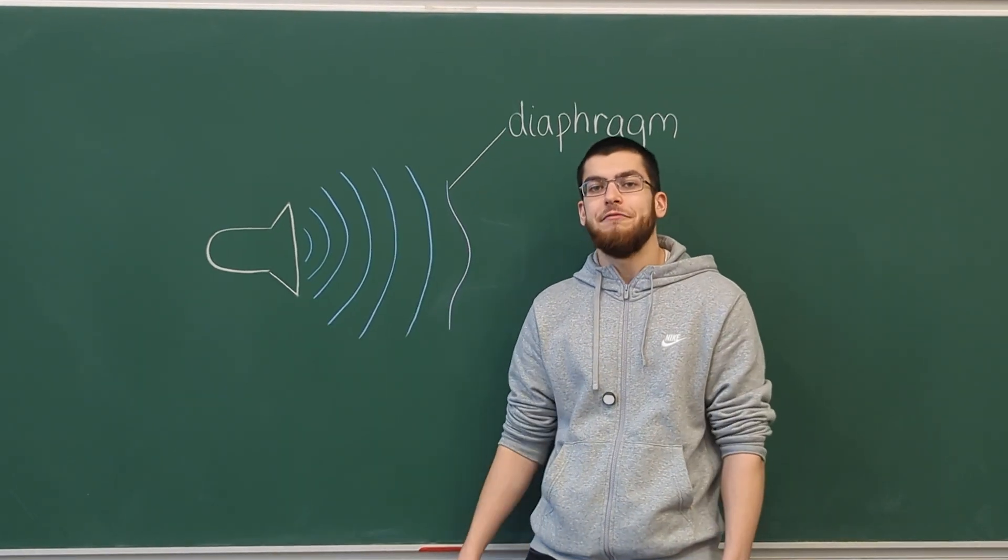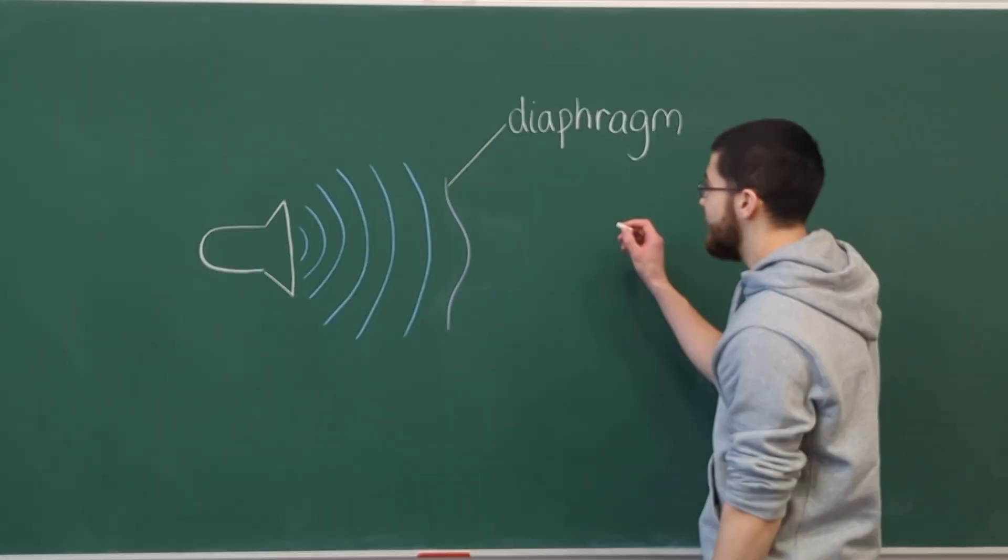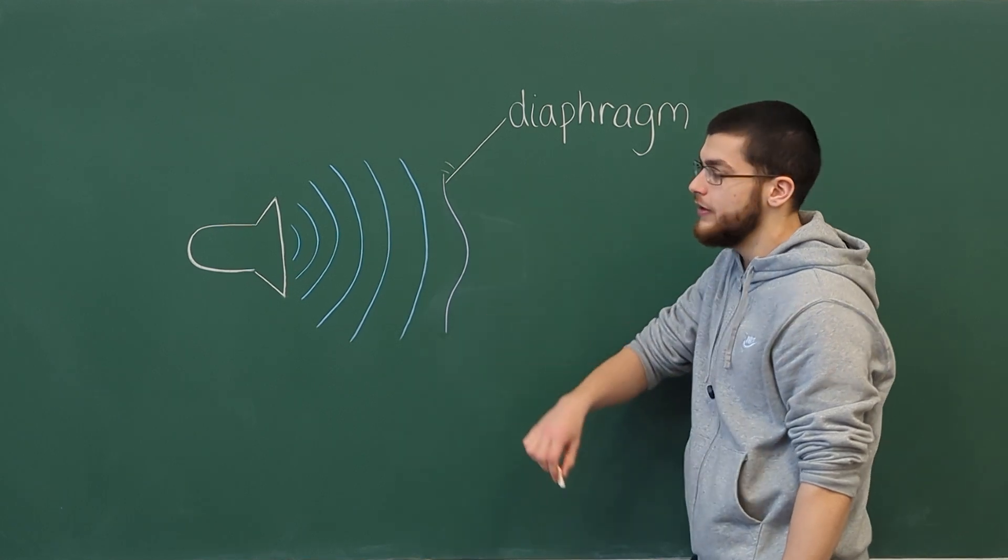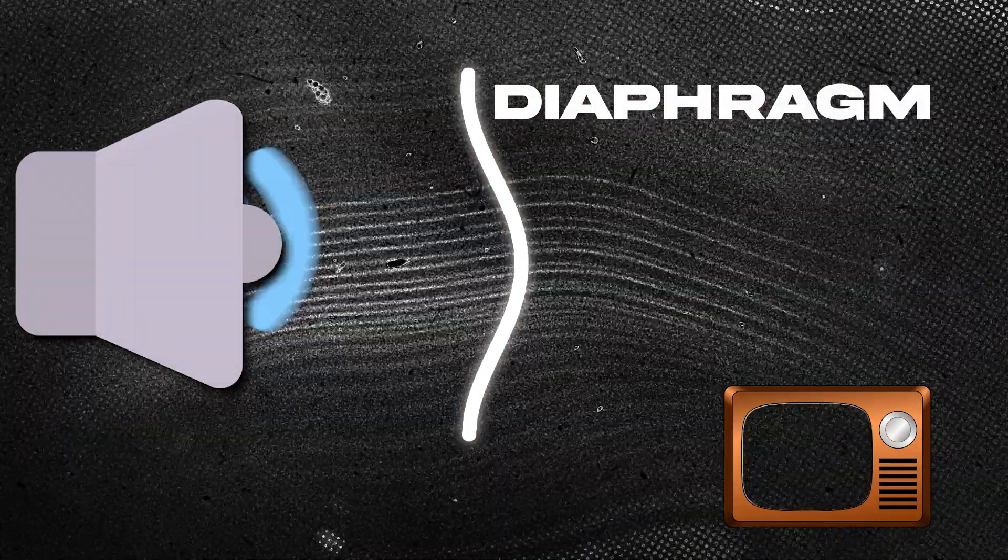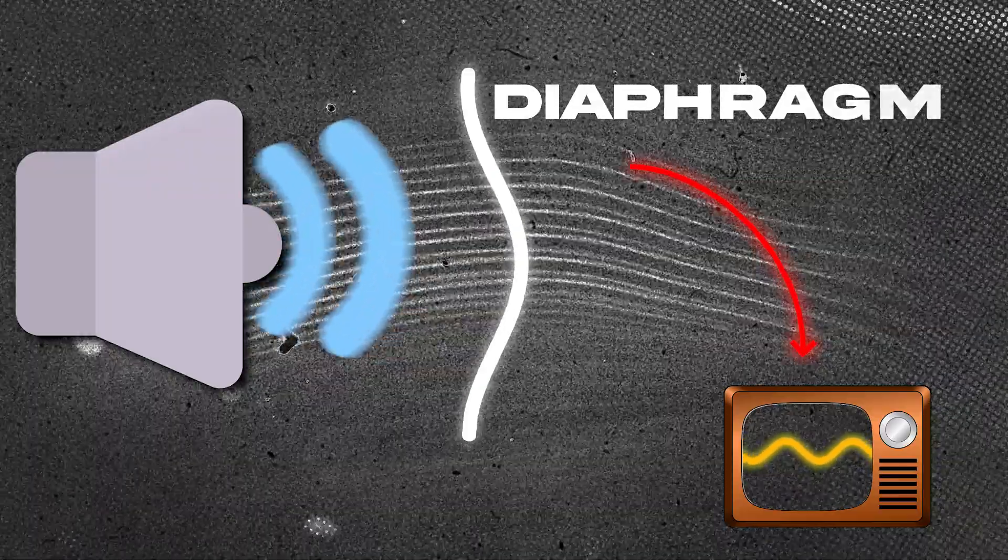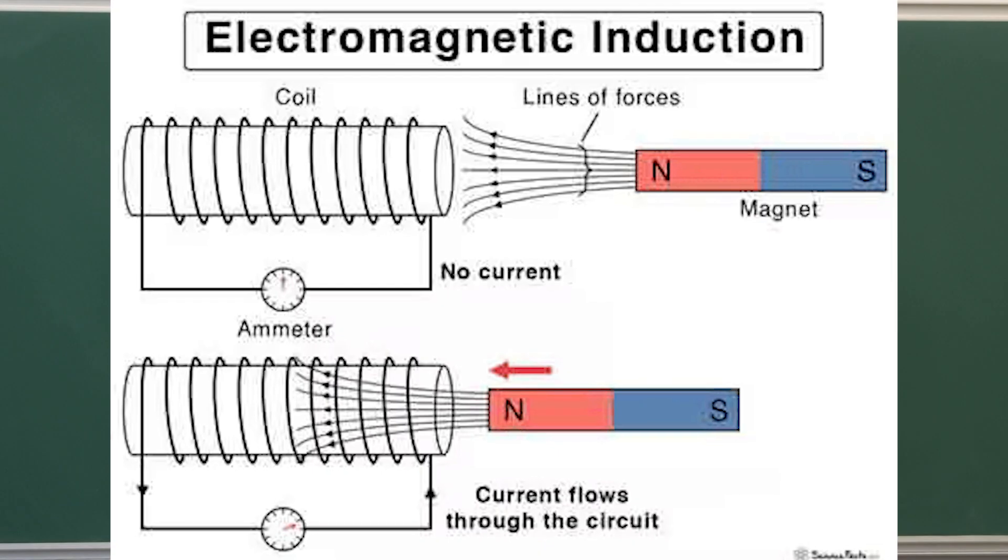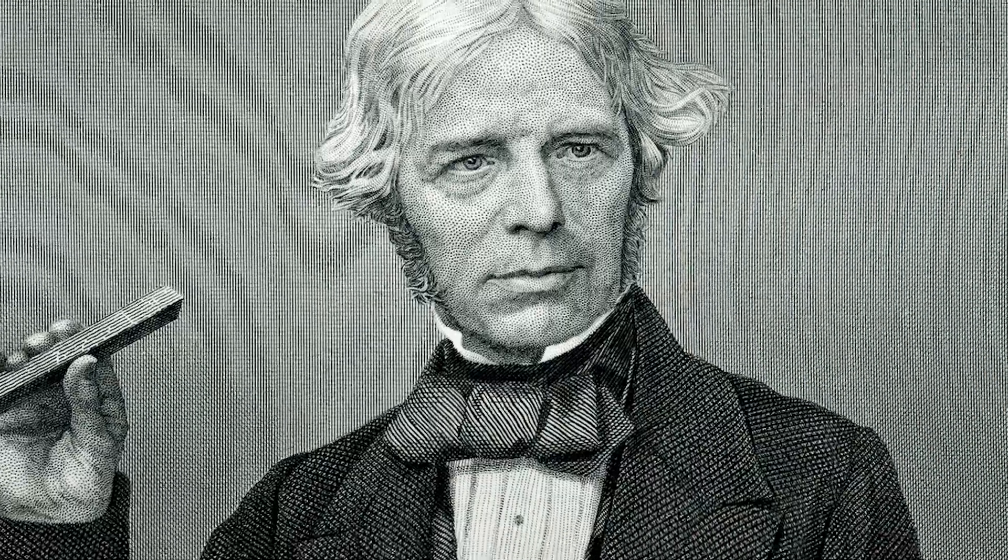Just like the phonautograph, a modern microphone contains a diaphragm which vibrates when sound hits it. But instead of tracing vibrations onto a surface, this diaphragm converts them into electrical signals. It does this using the principle of electromagnetic induction, which was discovered by Michael Faraday in 1831.